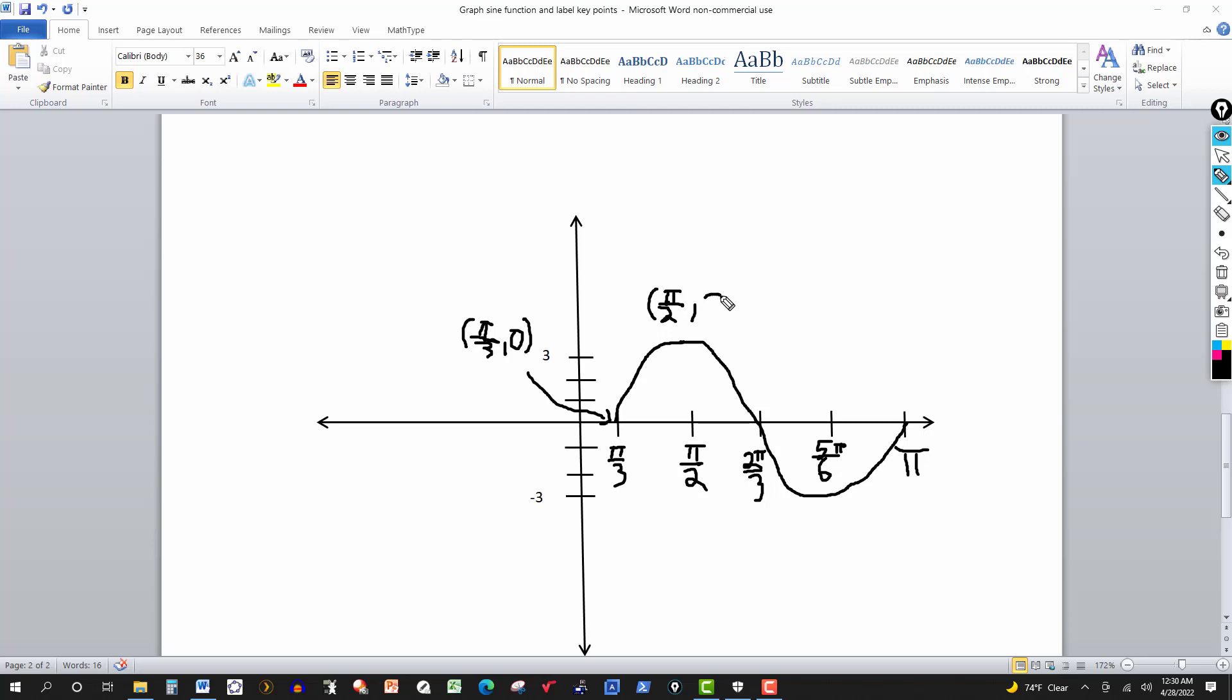And the amplitude is 3. And my graph is a little bit off here. That's why I label that as pi over 2 and 3.